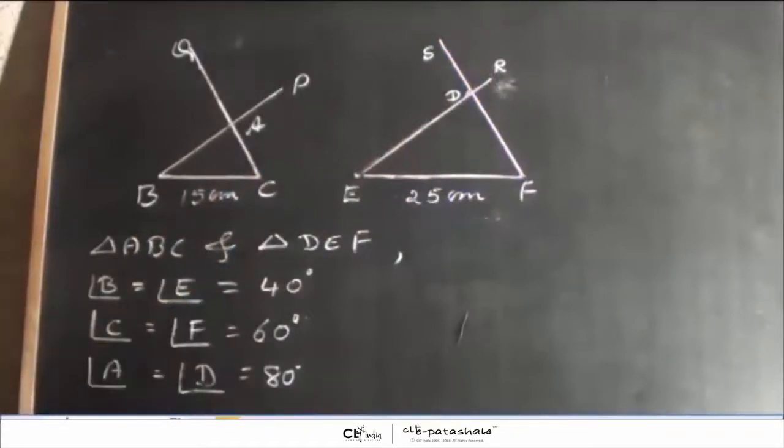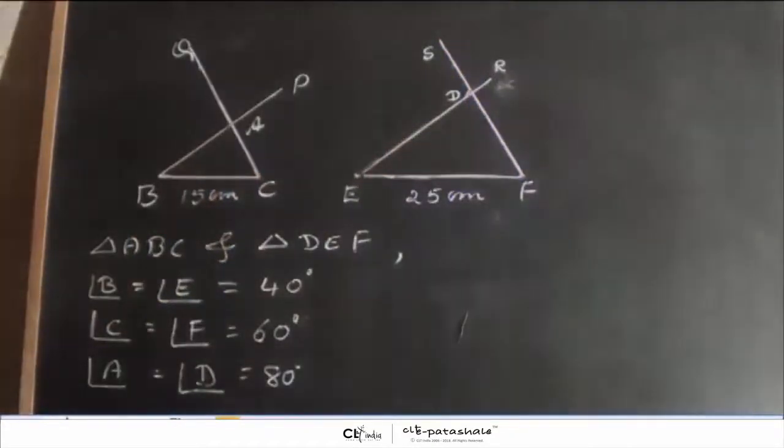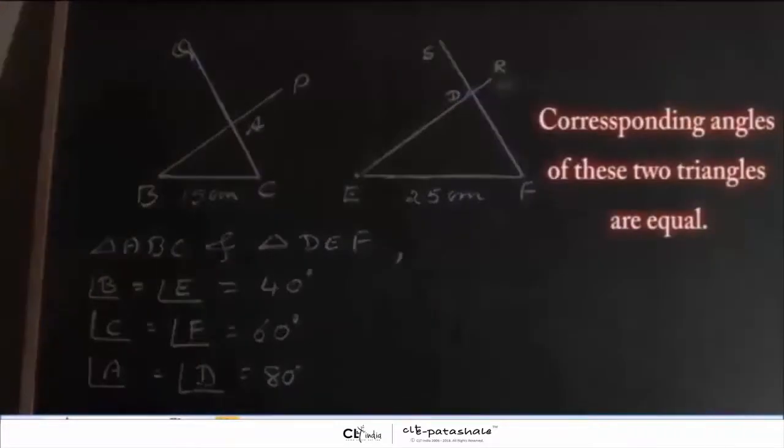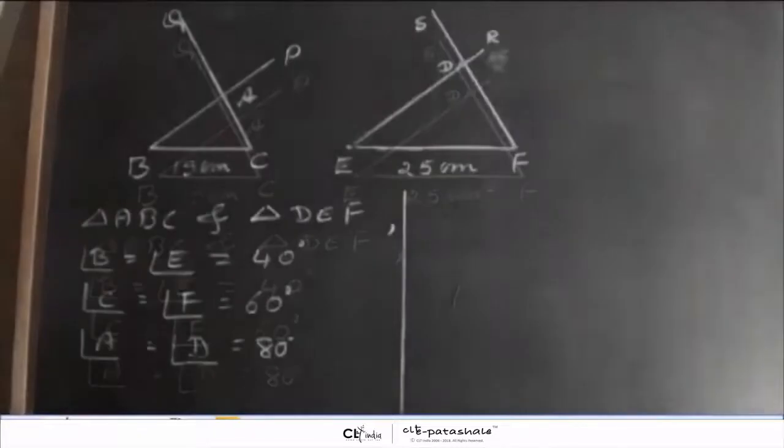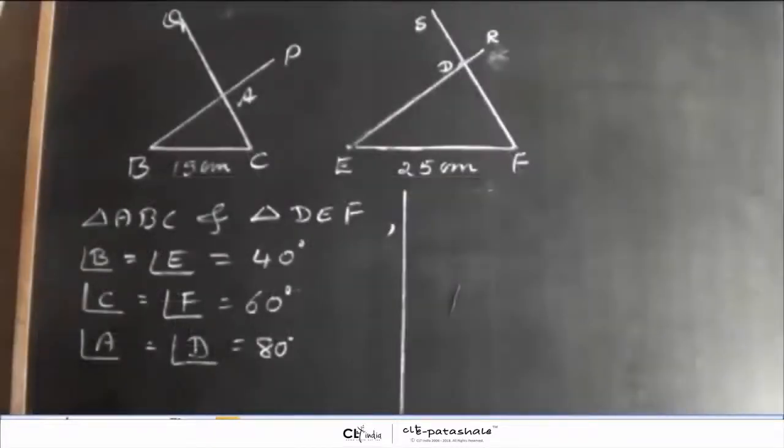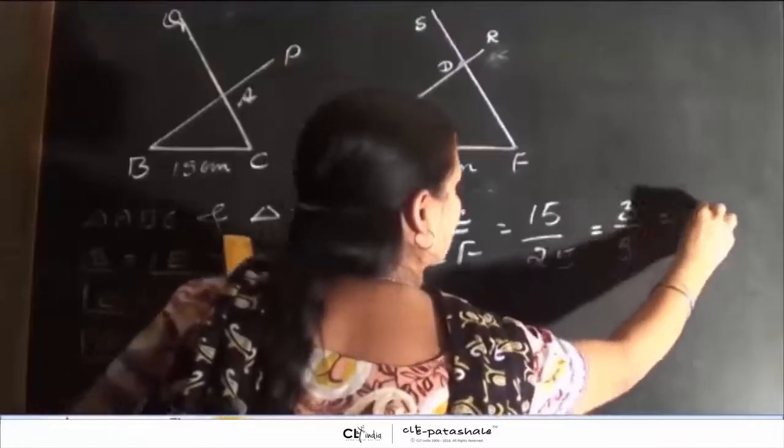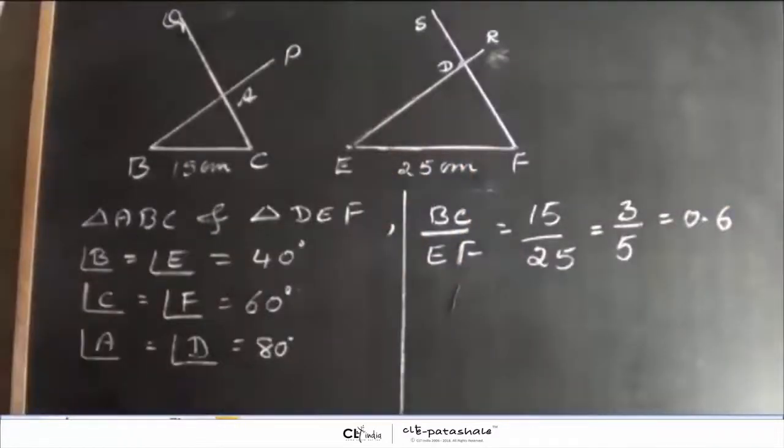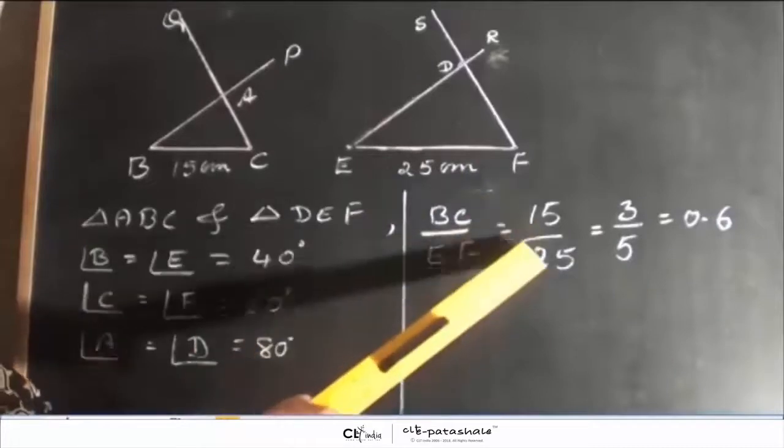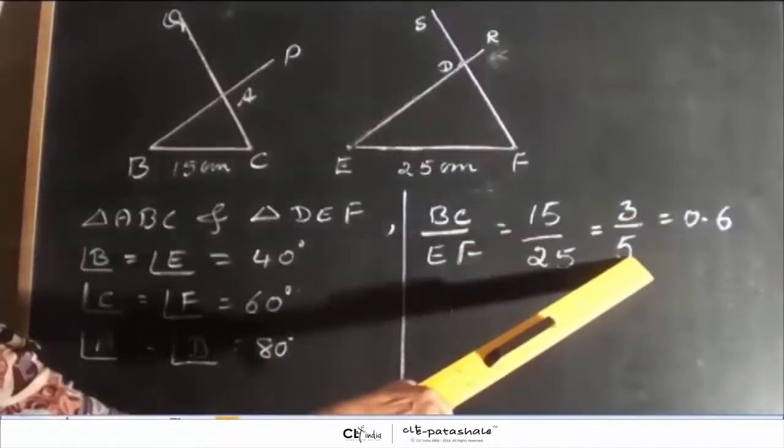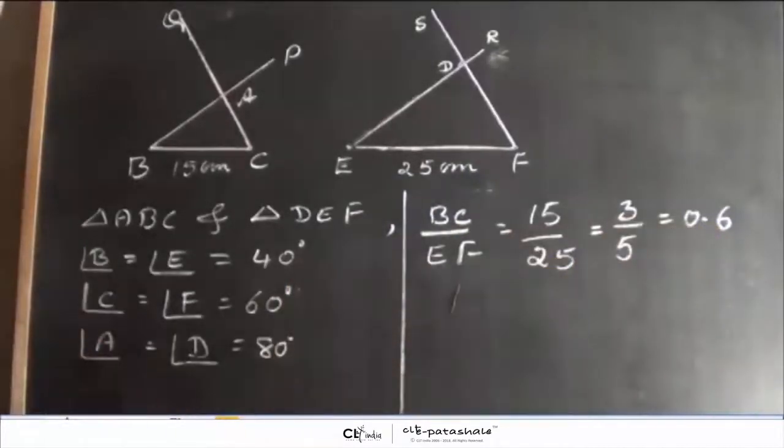Now what can we conclude from this? We can say that corresponding angles of these two triangles are equal. Now, let us measure the corresponding sides. BC by EF is equal to 15 by 25 which is equal to 3 by 5 which can also be written as 0.6.